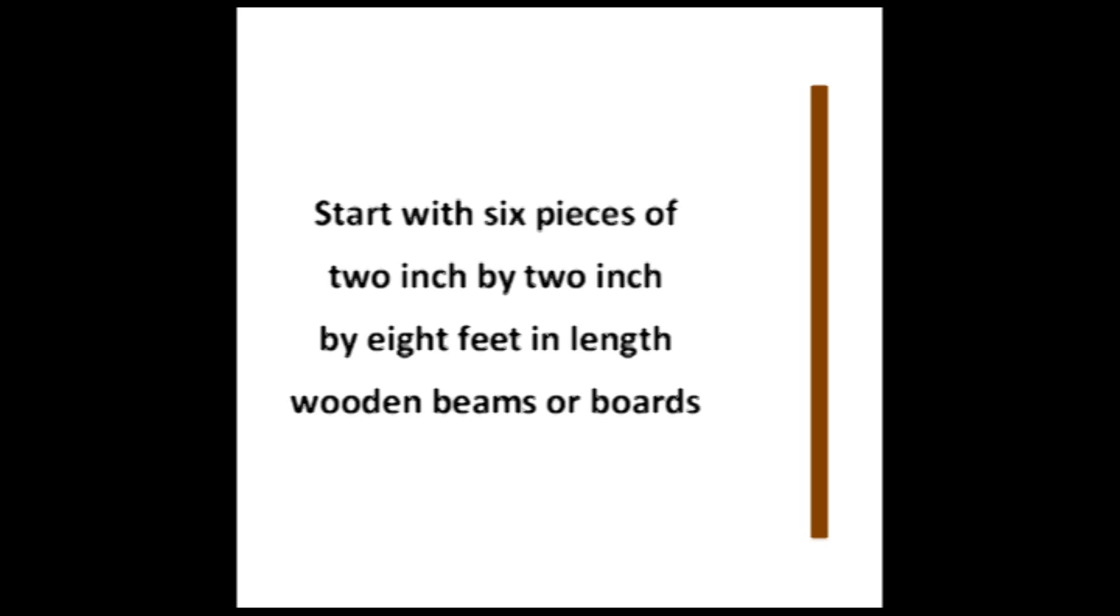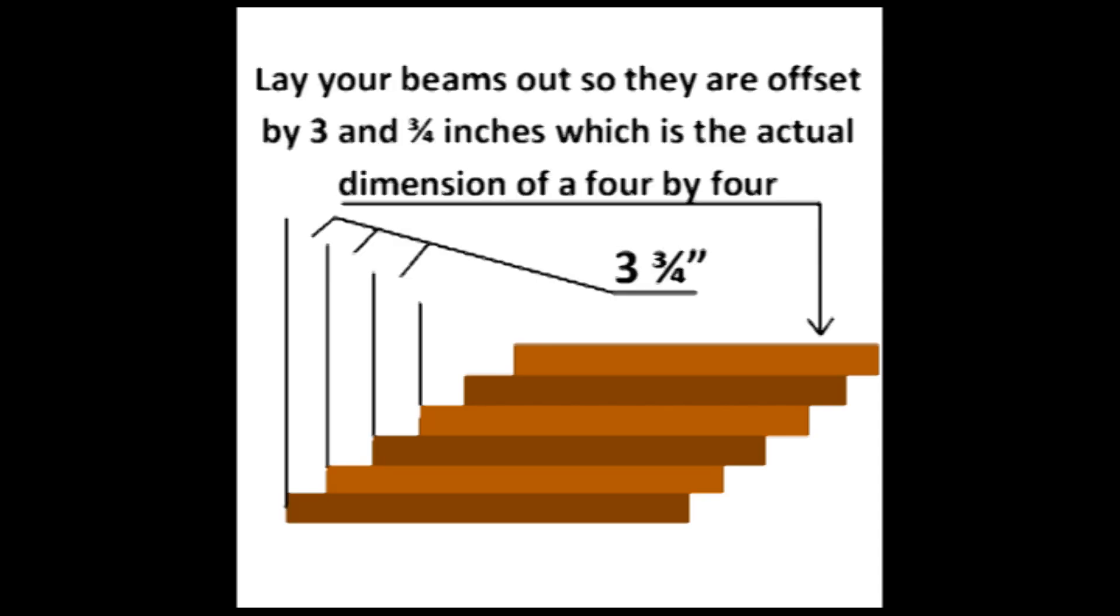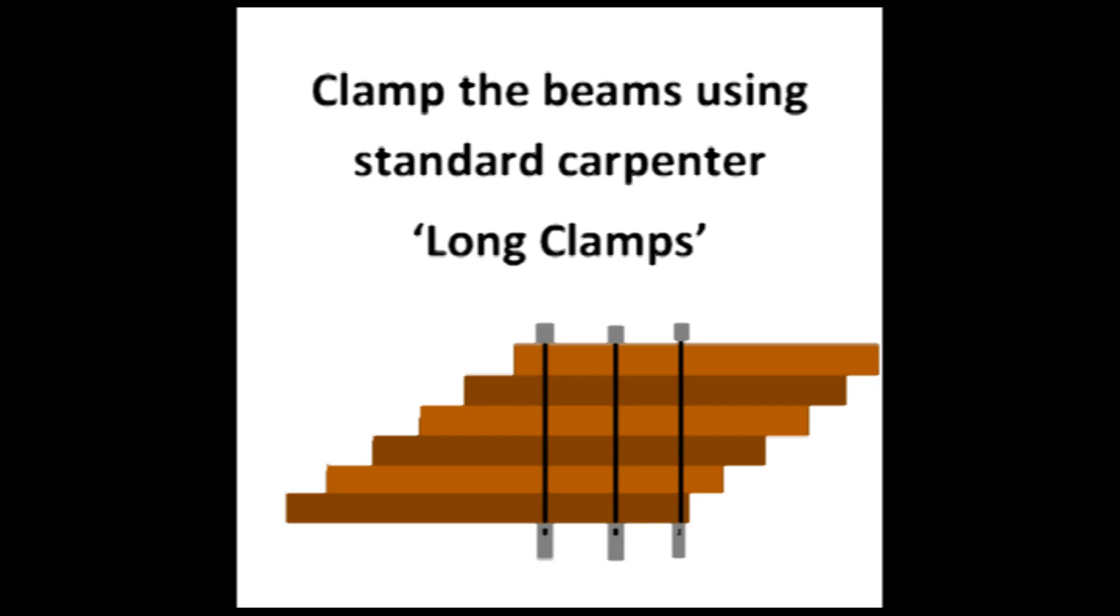You start with 6 each, 4 inch by 4 inch by 8 foot beams, and you lay the beams out in an area so they can be clamped together and cut. Arrange the beams so that they are offset by 3 and 3 quarter inches. That's how wide a 4 by 4 really is. Using 2 or 3 carpenters large wood clamps, clamp the beams tightly together.